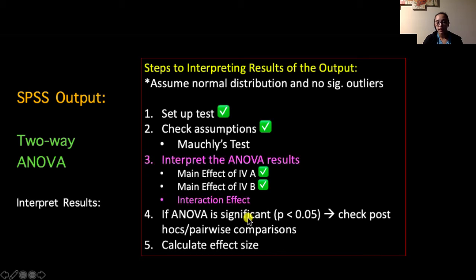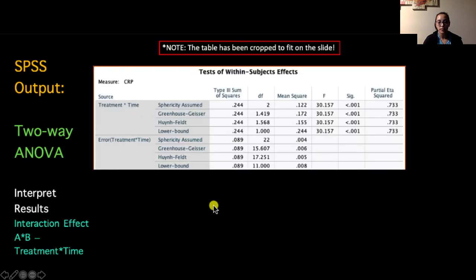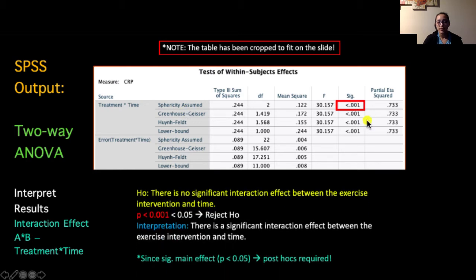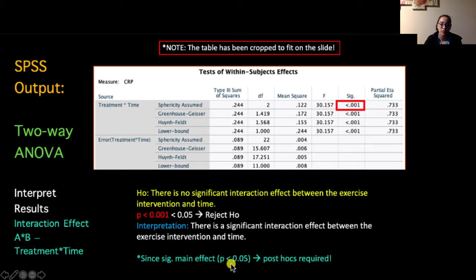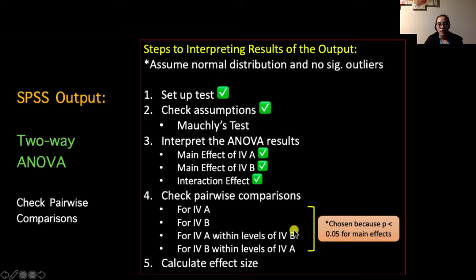The last main effect is the interaction effect: Treatment × Time. We assumed sphericity for the interaction, so we read that row's p-value, which is less than .001 — significant at p < .05. We reject the null hypothesis and conclude there is a significant interaction effect between exercise intervention and time. Since all three effects are significant, we need to look at pairwise comparisons or post-hoc tests for all of them.